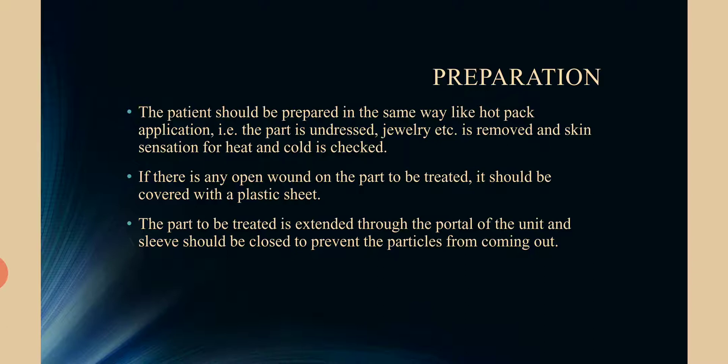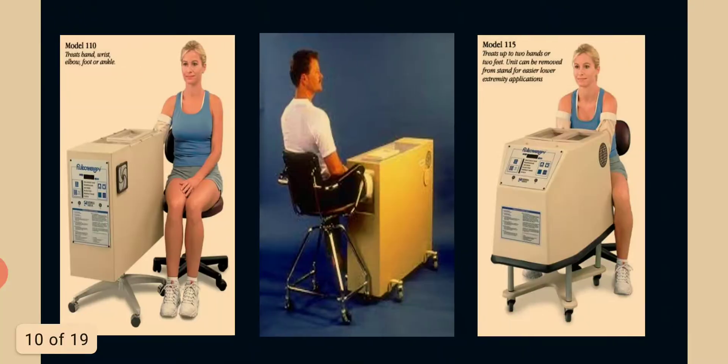The part to be treated is extended through the portal of the unit and the sleeve should be closed to prevent the particles from coming out. Model 110 treats the hand, wrist, elbow, foot, or ankle. Model 115 treats up to two hands or two feet, and the unit can be removed from its stand for easier lower extremity application.